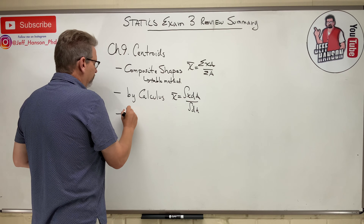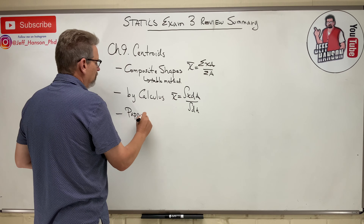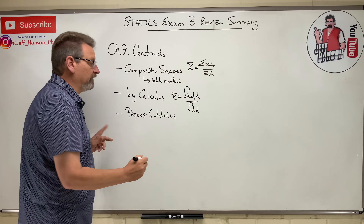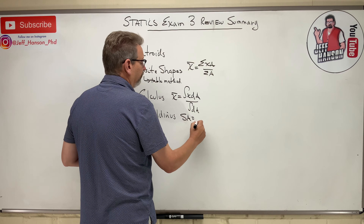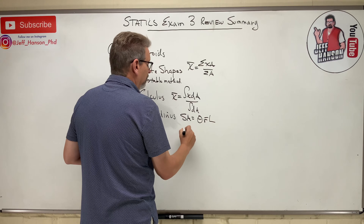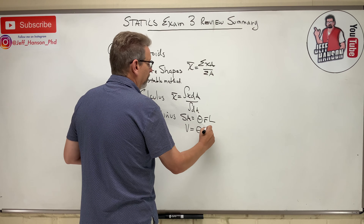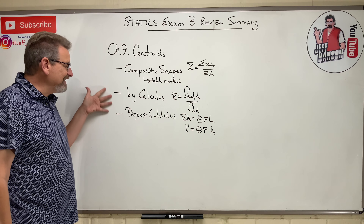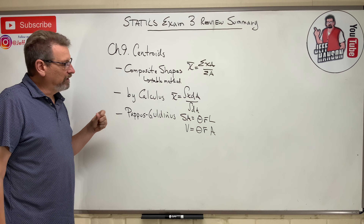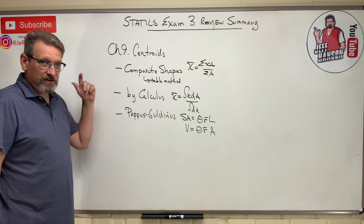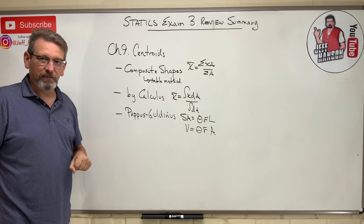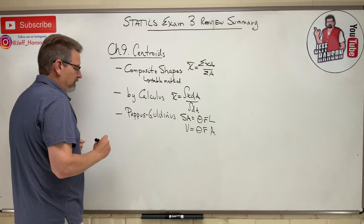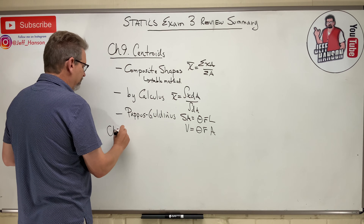The next topic in the centroid chapter was the Theorems of Pappus-Guldinus. There are two of them: surface area equals theta times r-bar times L, and volume equals theta times r-bar times A. Those are things we need to review. So there are three kinds of questions that can come out of that chapter, and whatever doesn't show up on Exam 3 you can pretty much expect on the final.